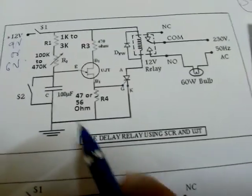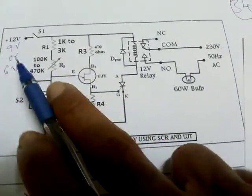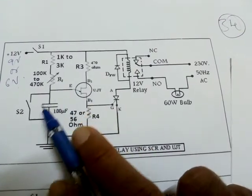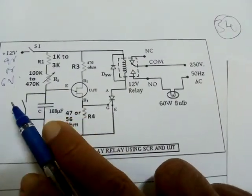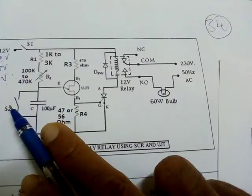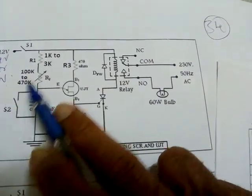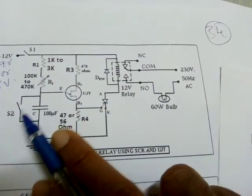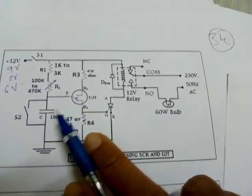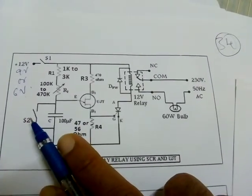Then you increase the pot resistance. Switch off this, increase the pot resistance. Close this and open this, so that capacitor discharges. And it should be open, while doing the experiment. Because if you close this, UJT will never trigger. Because capacitor charge will be 0. So, you should close and open.